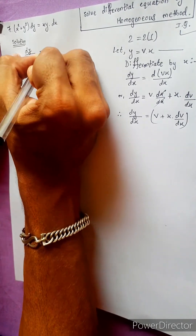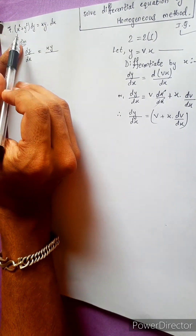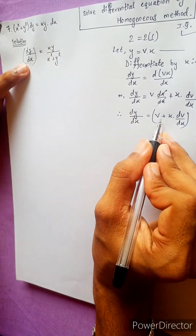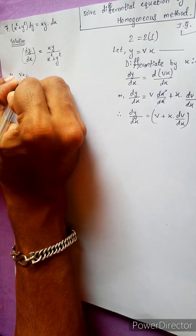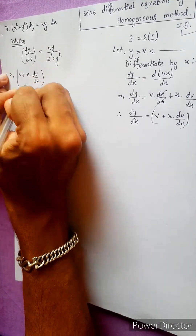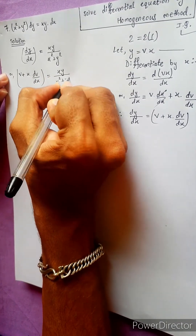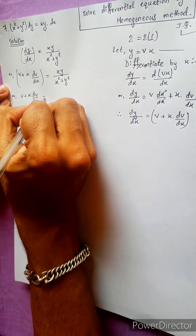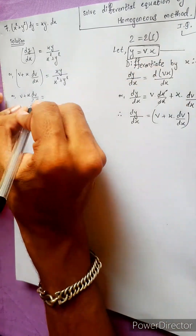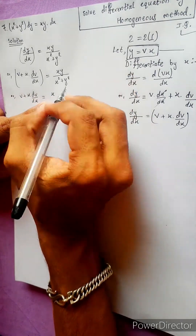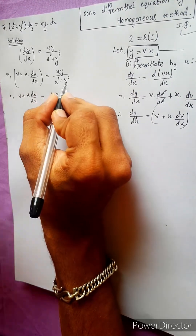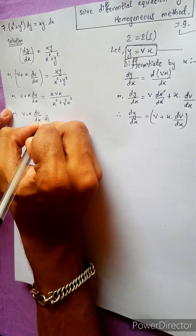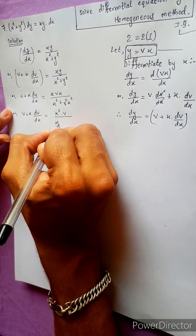It means this is xy. By this, xy equals to xy plus y squared. What's happening: v plus x·dv/dx equals to xy divided by x squared plus y squared. You have x·dv/dx equals to y.